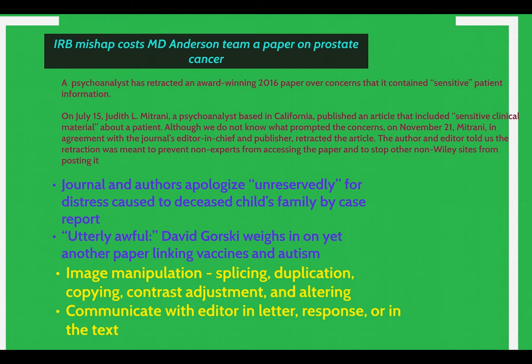One issue that often comes up now is whether there are certain topics you can't publish about. For example, papers on vaccines and autism are very controversial. There was recently a well-publicized case about a paper on imperialism that the journal retracted because people said the content wasn't proper. Another area is image manipulation — there was a big case at Ohio State where the author claimed they copied an image from one paper to another. The author claimed it didn't really affect the results, but the journal felt it did, and the paper had to be retracted.